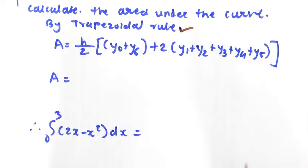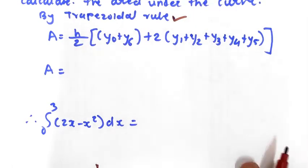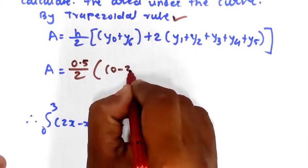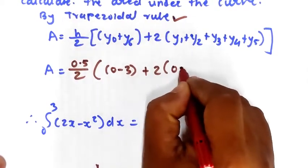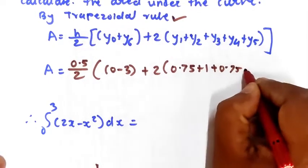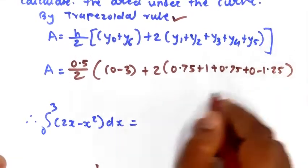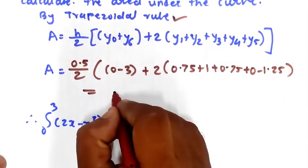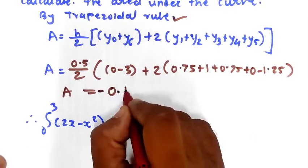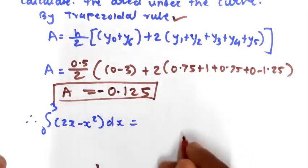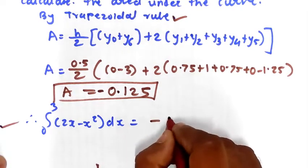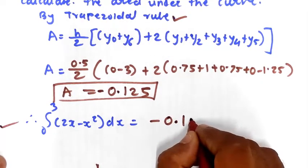The initial and final terms are y0 and y6. Putting in the values: Area = (0.5/2) × [(0 + (minus 3)) + 2×(0.75 + 1 + 0.75 + 0 + (minus 1.25))]. Simplifying, the area equals approximately minus 0.125. So the integration of this equation is minus 0.125.